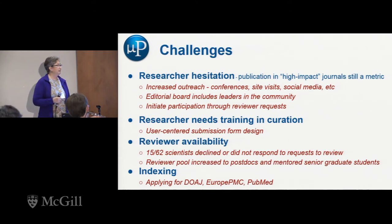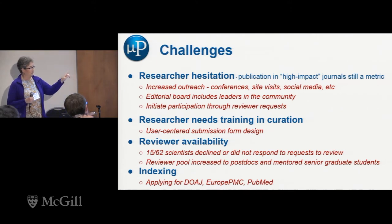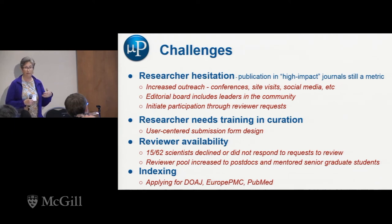With the Coco forms it's going to be massively fun. For reviewer availability — 15 out of 62 scientists declining an offer to review is not that bad for a new journal. We're increasing the reviewer pool and people are excited about that. Our biggest hurdle right now is getting indexed. We are working on it — first going for the DOAJ and then the others. We're guided very nicely by our librarian, so I'm not worried about that either.